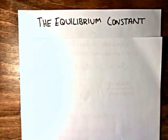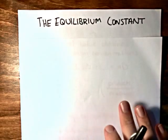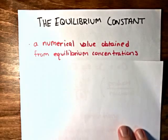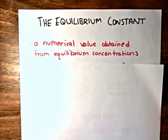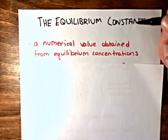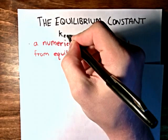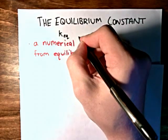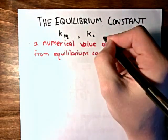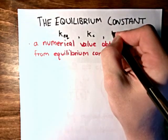In this video, I want to talk about something called the equilibrium constant, what it represents, and how it's calculated. The equilibrium constant is a numerical value that's unique for every chemical reaction. Often you'll see it represented as Keq, Kc, or less often, Kp.